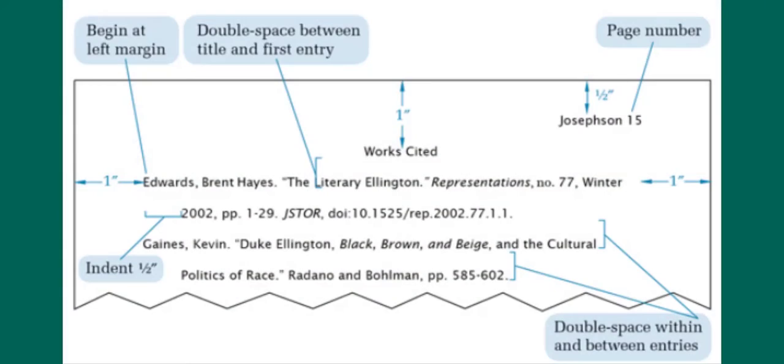At the end of your paper, the Works Cited list will be on the last page. Center the words Works Cited at the top of the page. If the list only contains one entry, make the heading Work Cited.